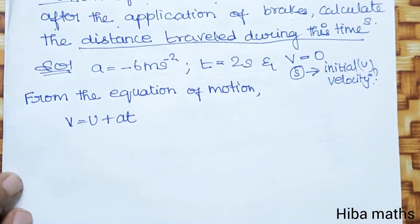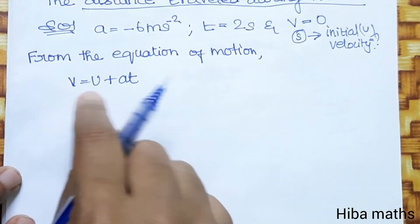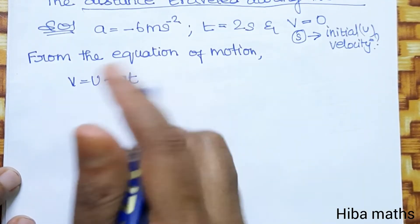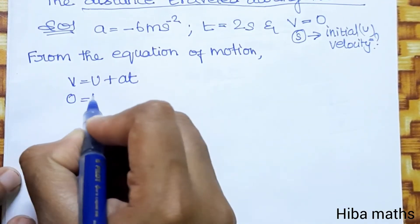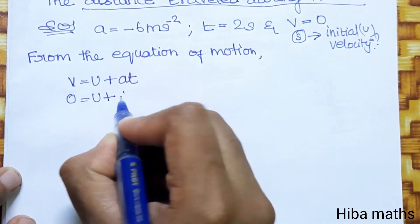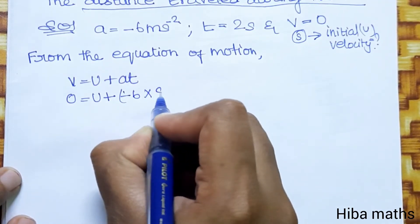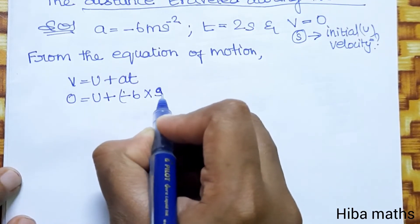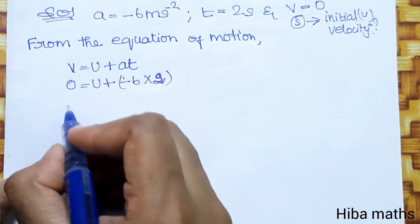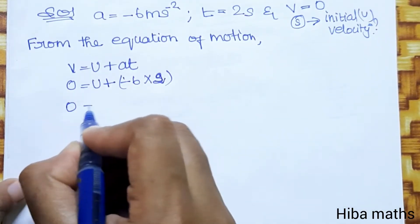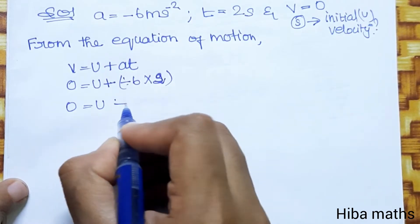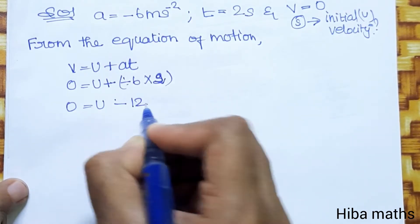To find the initial velocity u, we use the formula v = u + at. Here v value is 0, u is unknown, a is minus 6, and t value is 2. So: 0 = u + (minus 6) × 2, which gives 0 = u minus 12.